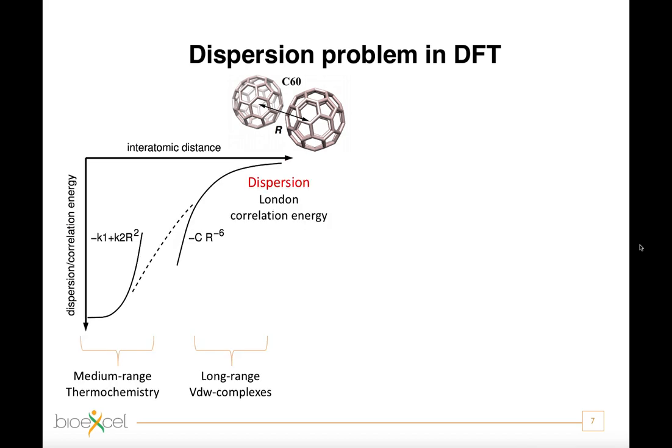In fact, the London dispersion can be considered as a long-ranged electron correlation effect. If r is the separation distance between the two interacting neutral objects, the London dispersion energy term can be approximately described to asymptotically scale, for large r, as 1 over r to the power of 6.